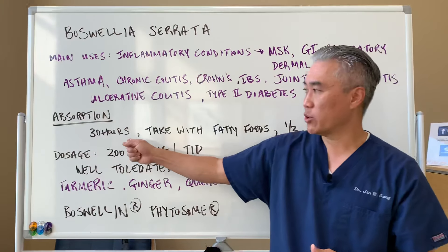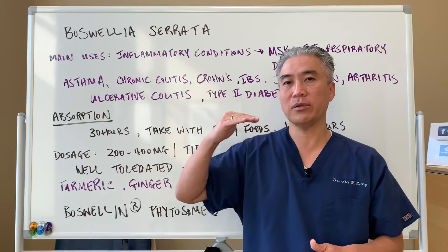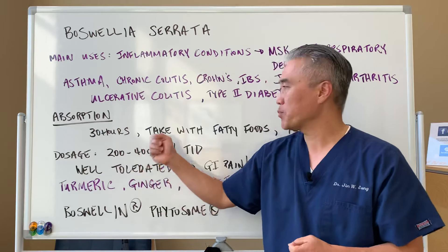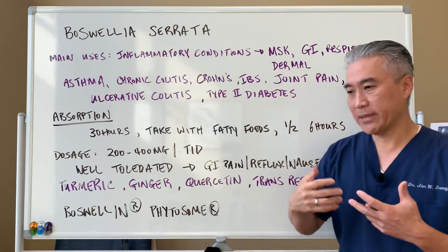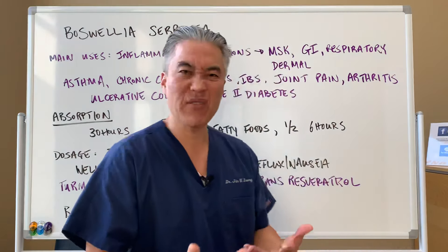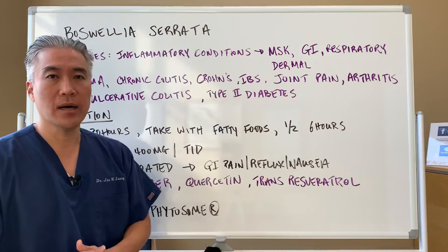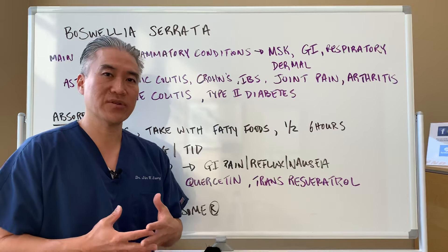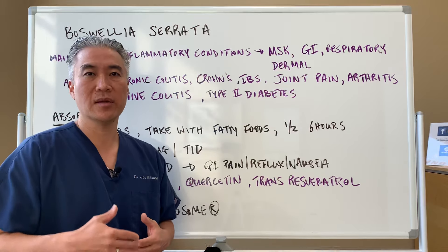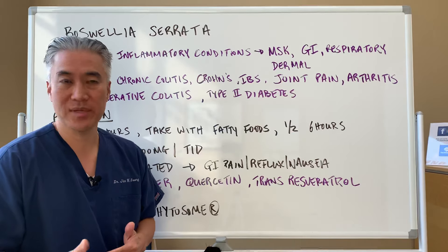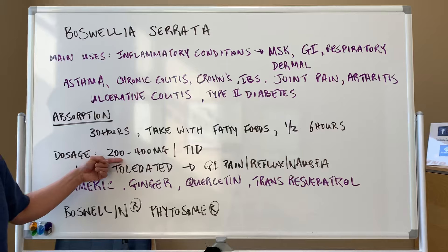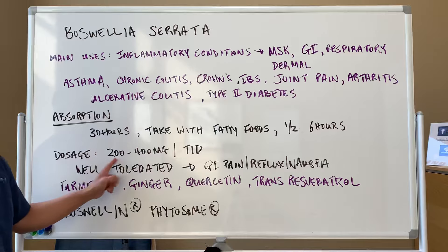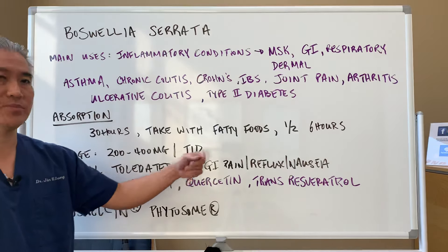Now, absorption. In order to absorb and get your blood levels stable with Boswellia, it takes about 30 hours. Take it with fatty food — something with oils and fats, or avocado and stuff like that. The half-life is about six hours, so it gets out of our system. You want to take this multiple times throughout the day, maybe three times a day. Dosage is 200 to 400 milligrams, three times a day with meals.